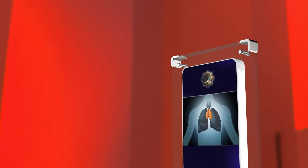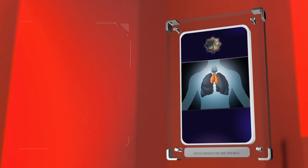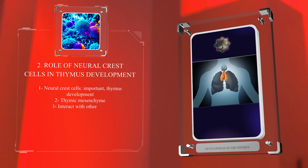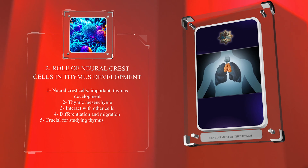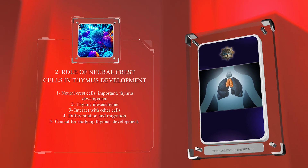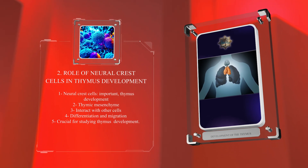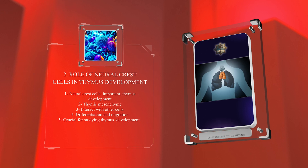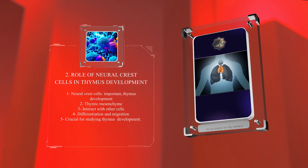Neural crest cells are important for thymus development. They contribute to the formation of thymic mesenchyme and interact with other cells, influencing their differentiation and migration. This understanding is crucial for studying thymus development.